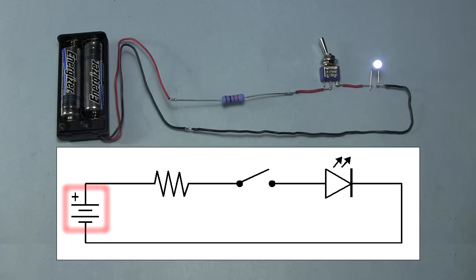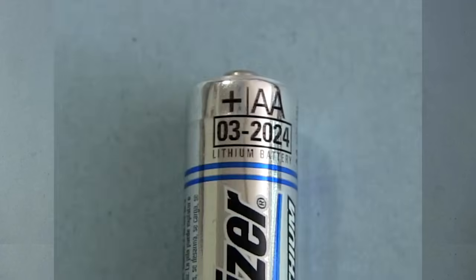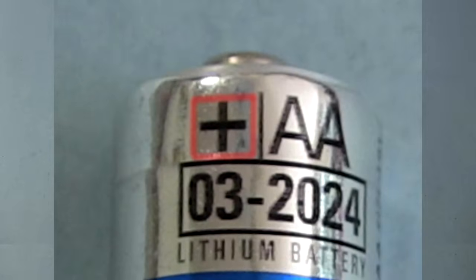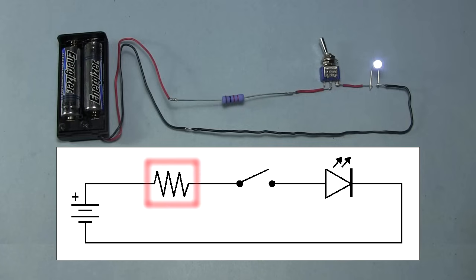The longer line is the positive side of the battery. Most batteries have a marking on them indicating which terminal is positive and or negative. In North America, the symbol for the resistor is a zig-zag line like this.